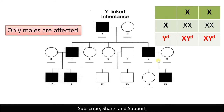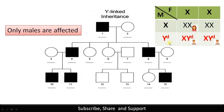This is a Punnett square. These are the gametes: from the female XX, and from the male X and Y. This Y in red color with 'D' indicates a disorder or trait. As you can see, both males are affected as they receive the Y chromosome from the father, whereas the females are not affected.